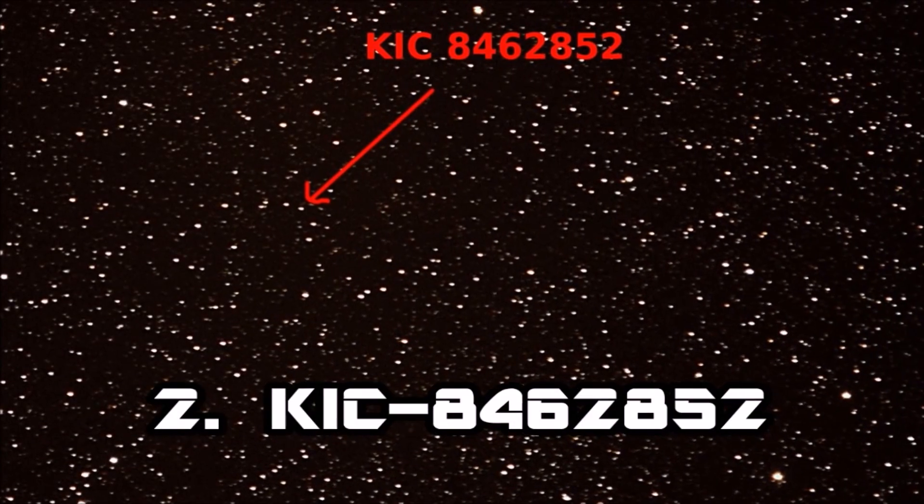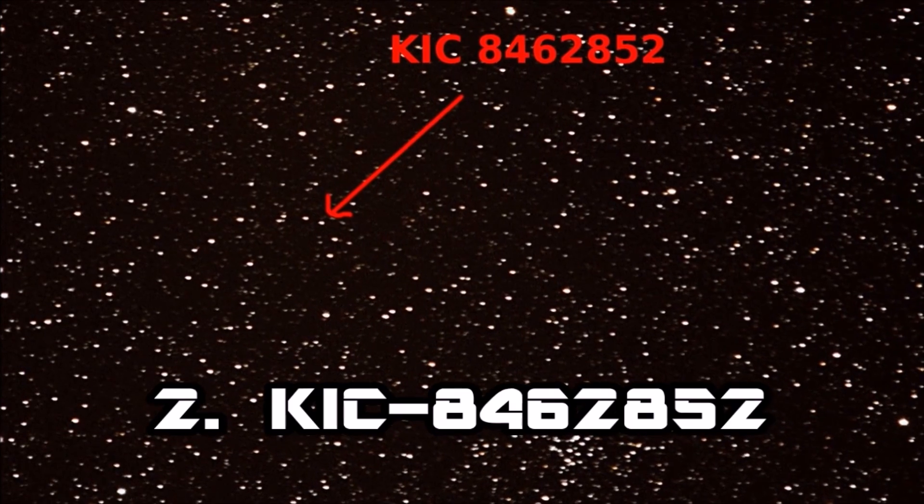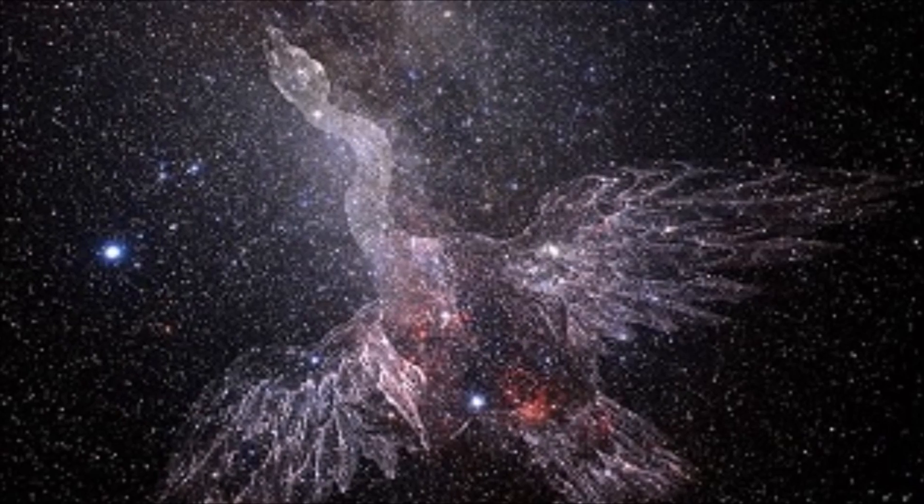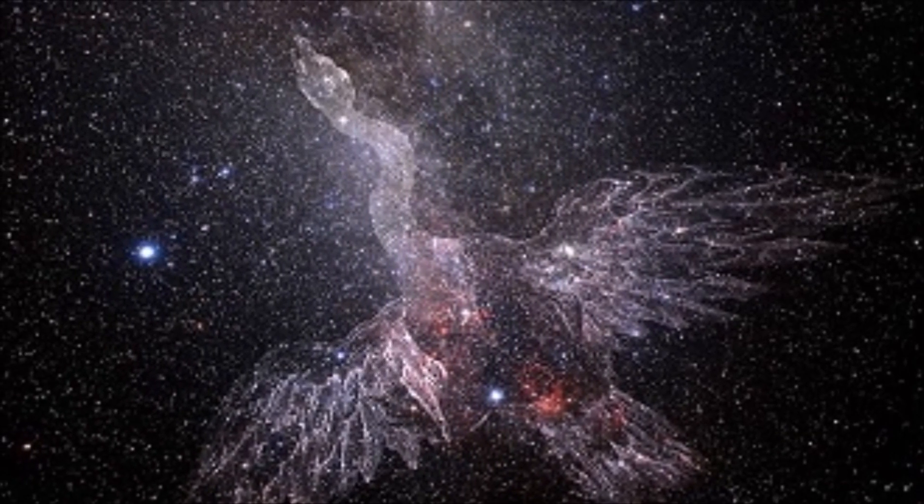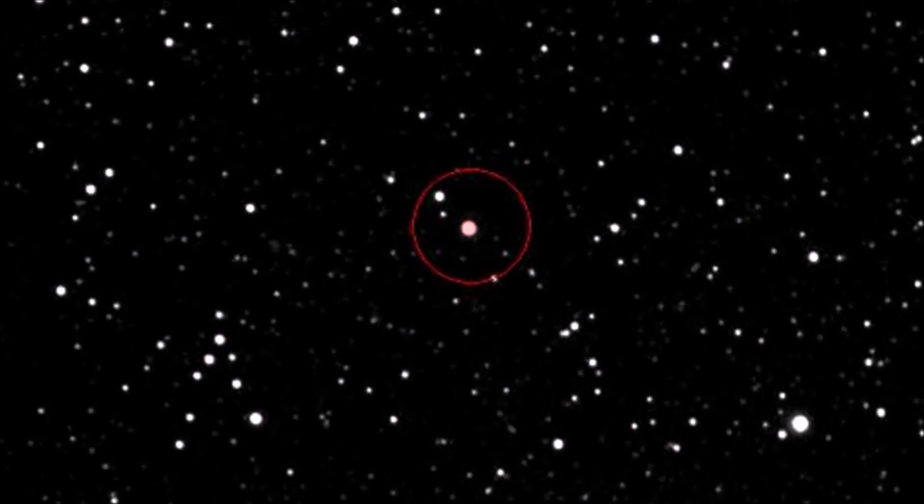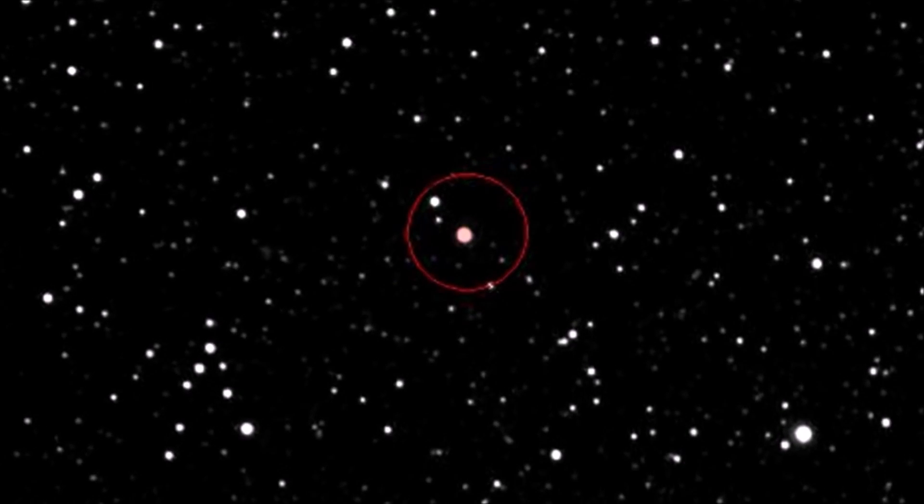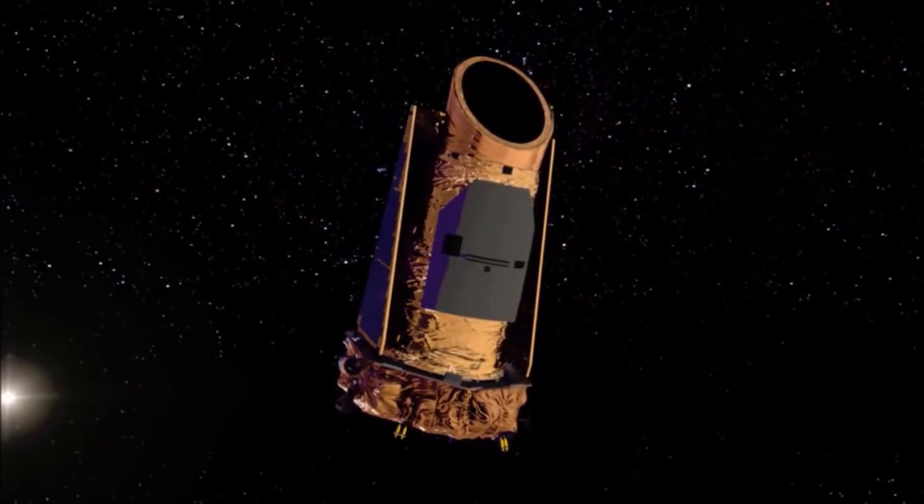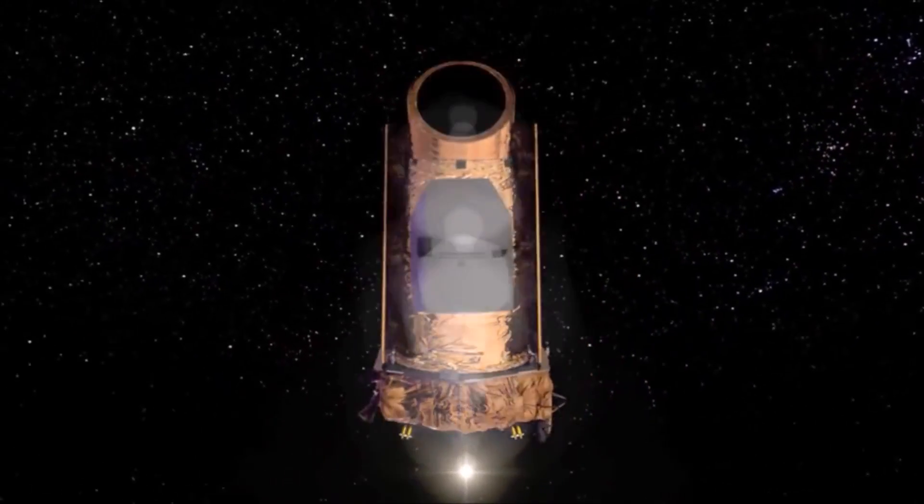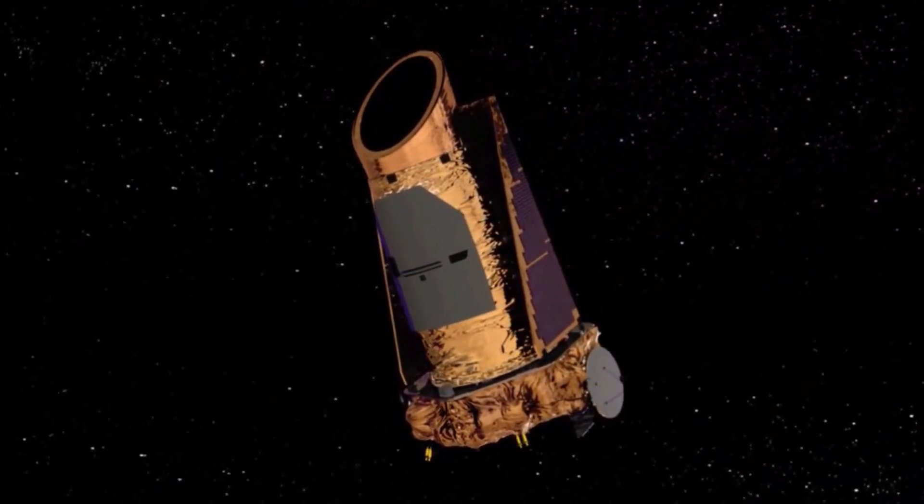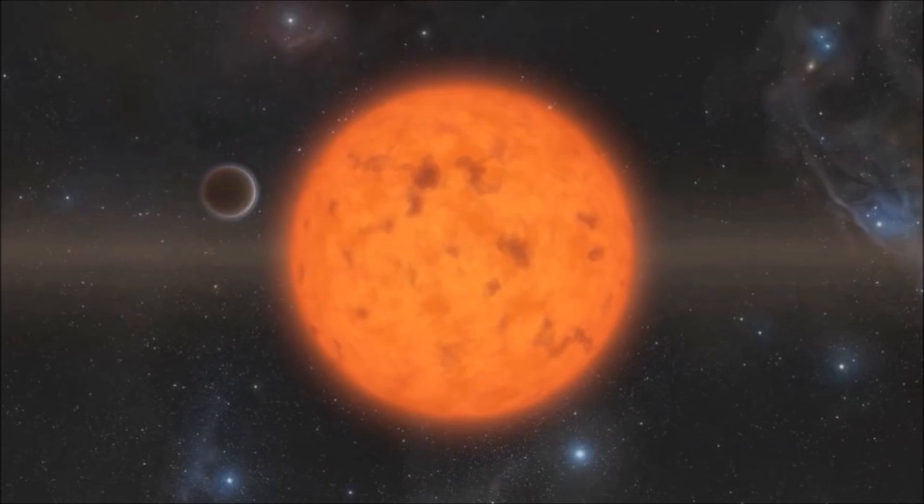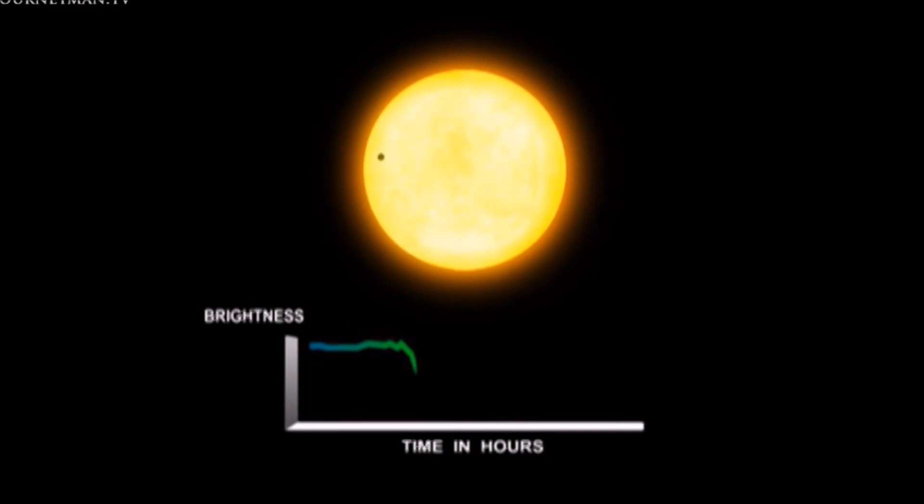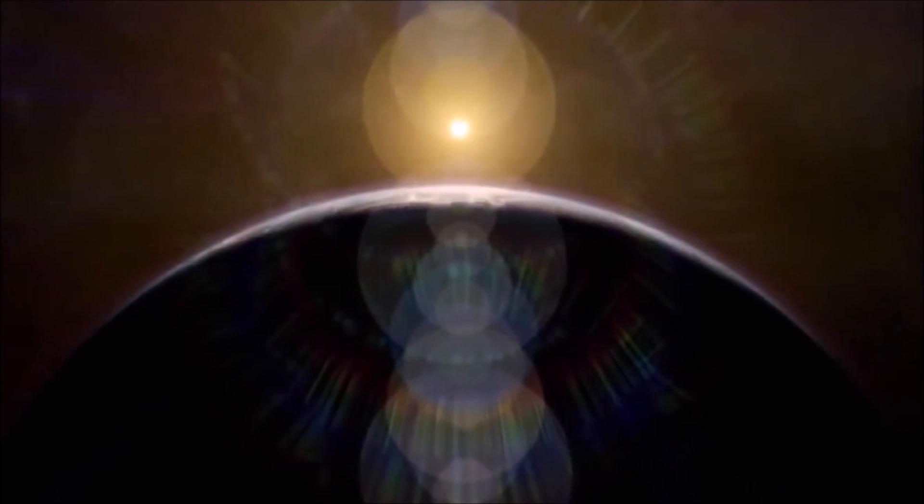Number two: KIC 8462852. KIC 8462 is a star located in the constellation Cygnus, over a thousand light-years from Earth. Unusual light fluctuations by the star were discovered by scientists in 2015. The discovery was made from data collected by the Kepler Space Telescope, which observes changes in the brightness of distant stars to detect exoplanets. When a planet orbits a star, the star's brightness usually reduces by around 1%, but KIC 8462 has seen reductions of up to 22%. This suggests something enormous is moving past it.